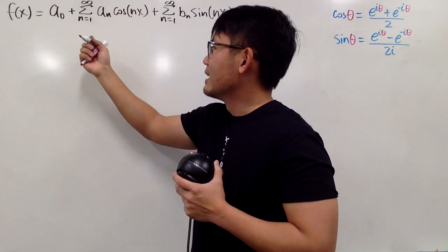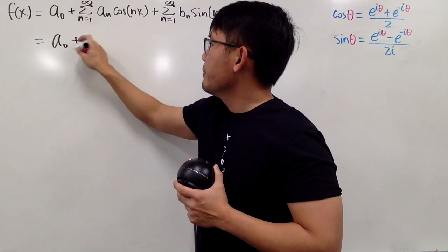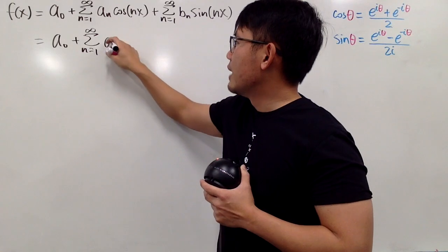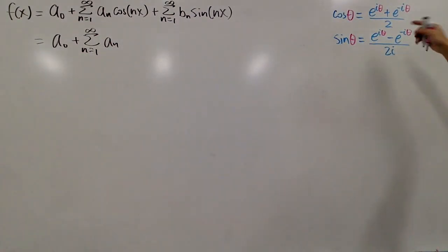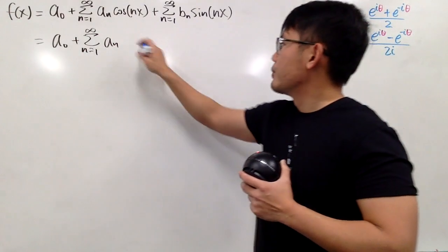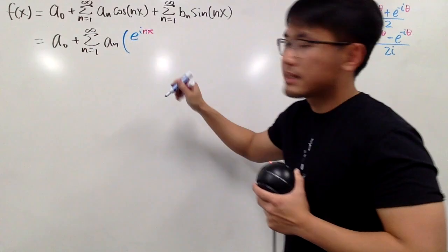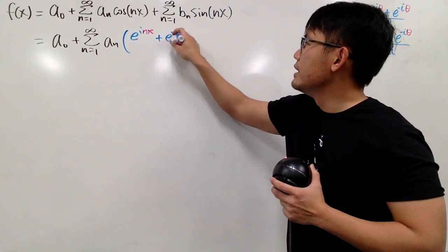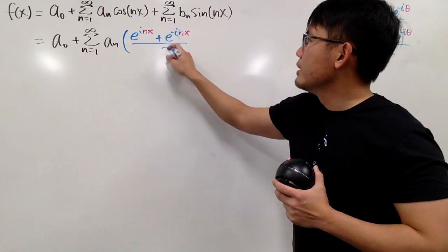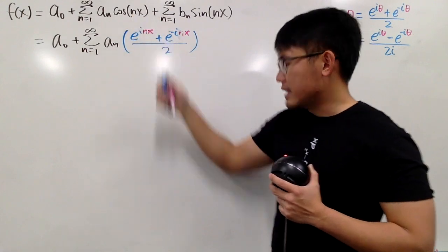Let's write down the things we are not going to touch. So a₀ stays. And here it's the sum as n goes from 1 to infinity, and we have aₙ. For cosine of nx, we put down e to the i times nx, and we add e to the negative i times nx, and then divide it by 2. This is the complex version of cosine of nx.